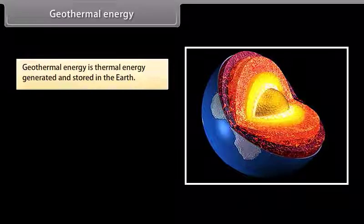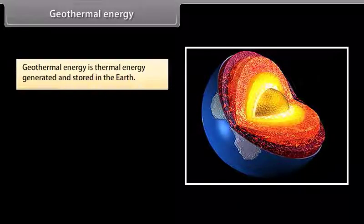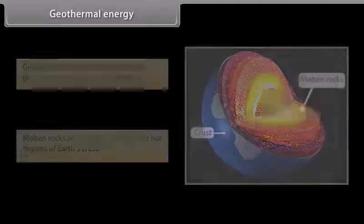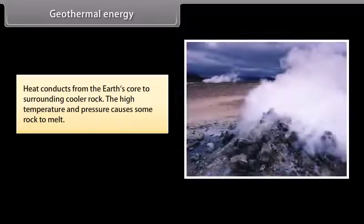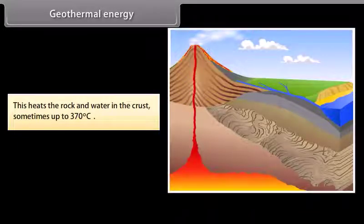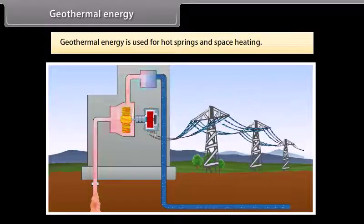Geothermal energy. Geothermal energy is thermal energy generated and stored in the earth. Molten rocks are formed in the deeper hot regions of earth's crust. Heat conducts from the earth's core to the surrounding cooler rock. The high temperature and pressure causes some rock to melt. This heats the rock and water in the crust, sometimes up to 370 degrees Celsius. Geothermal energy is used for hot springs and space heating.